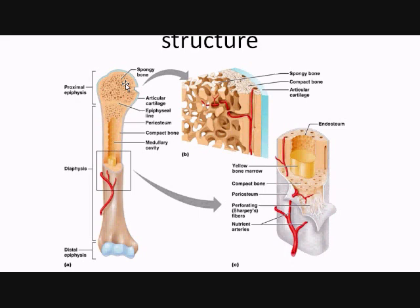Now let's talk about the spongy bone area. This is rich in red bone marrow, which means you're going to have a huge supply of red blood cells created here — blood cells in general. In adults, the production of red blood cells occurs in the red bone marrow, so this is a rich source for red blood cells.